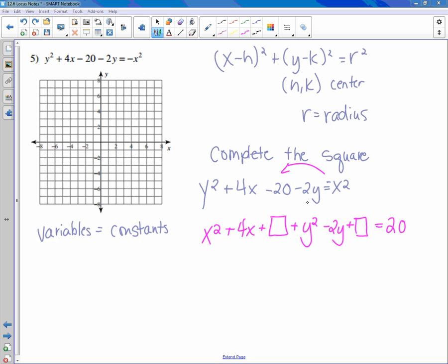So I rearranged the order here. I moved negative x squared to this side of the equality, and I moved negative 20 to that side of the equality. That was my first step—just trying to get everything in the order that I want.